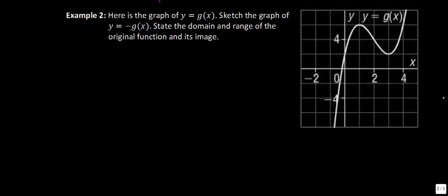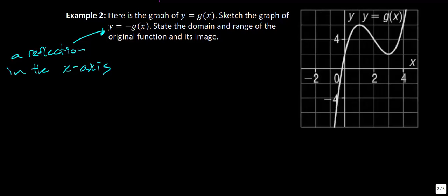Example 2 says: here's the graph of y is equal to g of x — sketch the graph of y is equal to negative g of x. Because the negative is in front of the function, that is going to be a reflection in the x-axis, not the y-axis like the last example. Then they want us to state the domain and range.